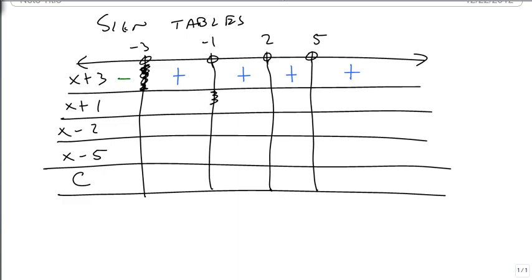So we do the same thing with the x plus 1. And I'm 0 here at minus 1. And I'm positive as I get bigger. But I'm negative as I get smaller. And this pattern just continues. So we find out where we're 0. And then anything to the right is positive. And anything to the left is negative.